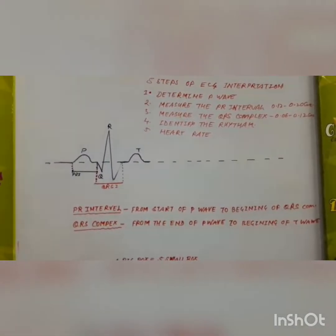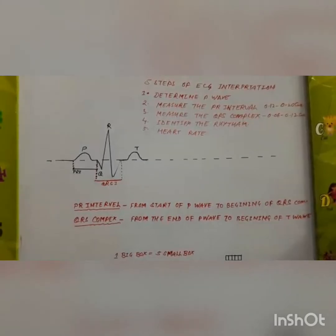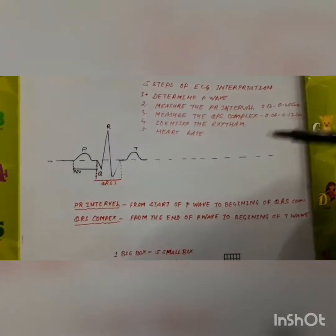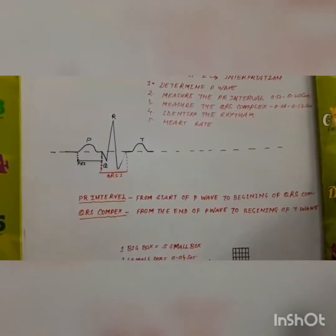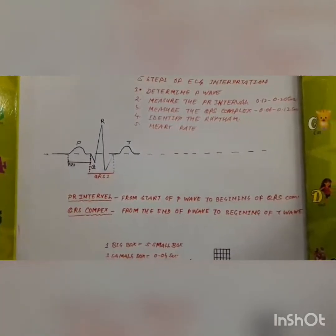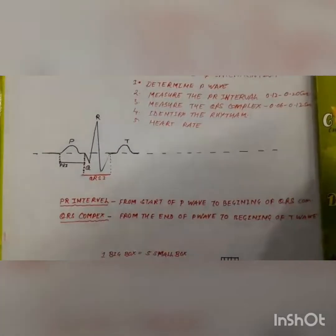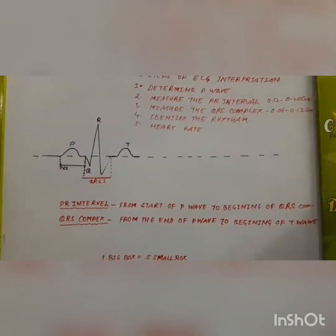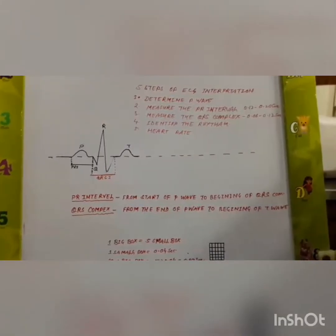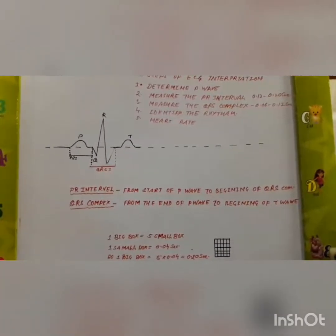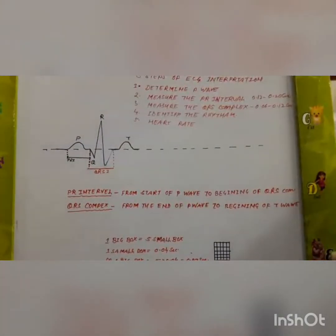Now, this is the basic diagram of an EKG. In an EKG, there is a P wave, a QRS complex, a T wave, a PR interval. These are the basic components of an EKG. The P wave represents the contraction or depolarization of the atrium. The QRS complex represents the ventricular depolarization or contraction — it looks like an inverted V. It represents ventricular depolarization. Then there is a small bump — the T wave — which represents ventricular relaxation.